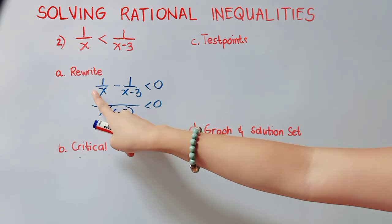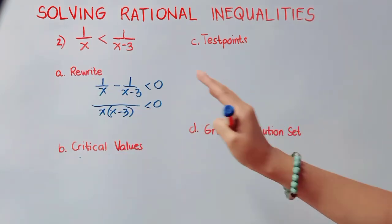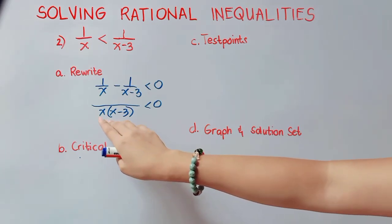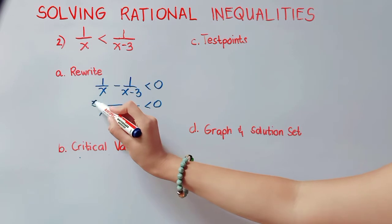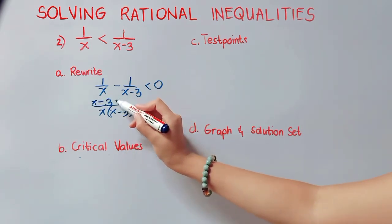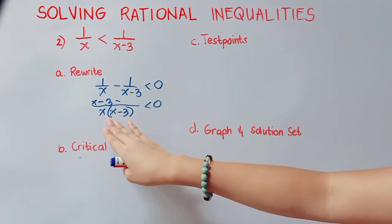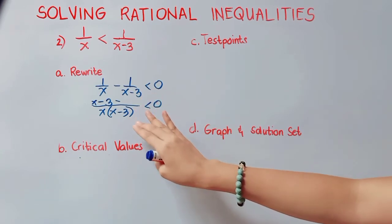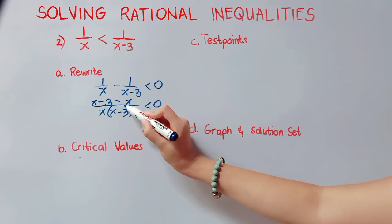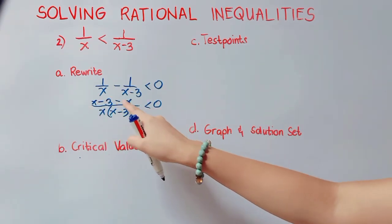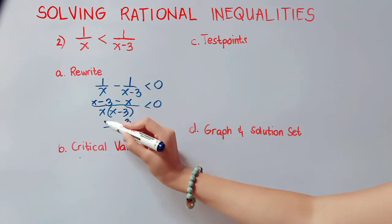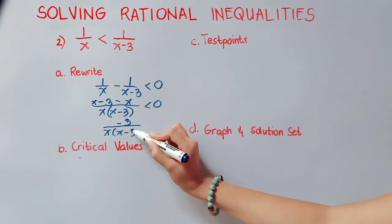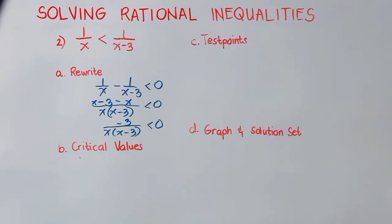We divide the LCD by each denominator and multiply the result by the numerator. For the first expression, x cancels, leaving x minus 3 times 1, which is x minus 3. For the second expression, quantity x minus 3 cancels, leaving x times 1, which is x. We can simplify: x minus x is 0, leaving negative 3 all over the LCD, less than 0. We now get our critical values by equating numerator and denominator to 0.